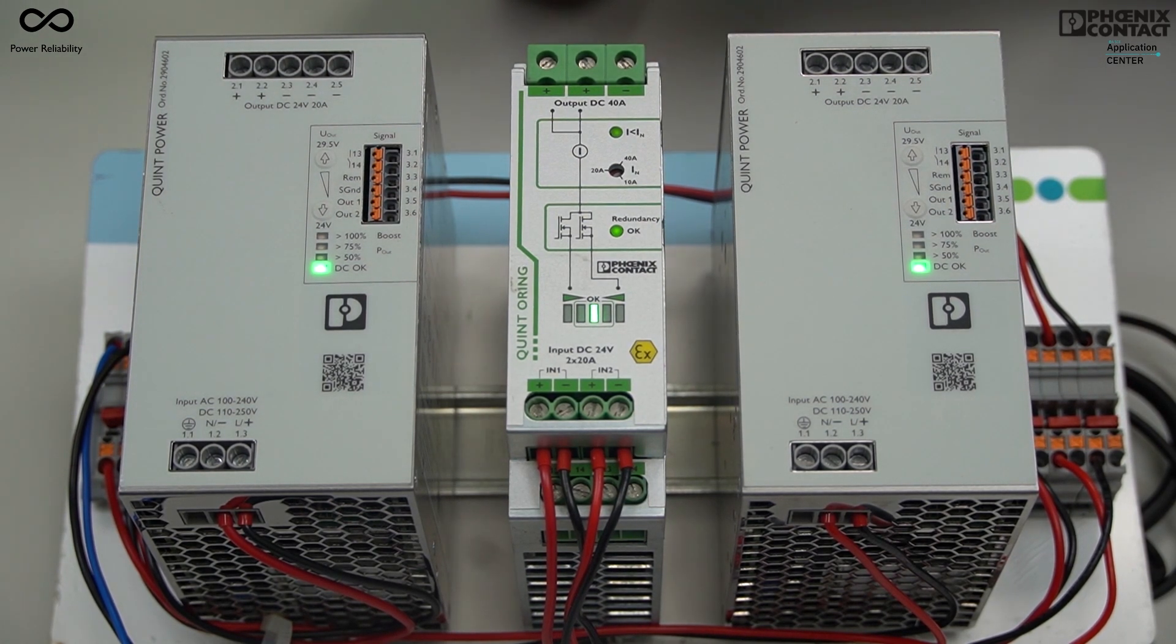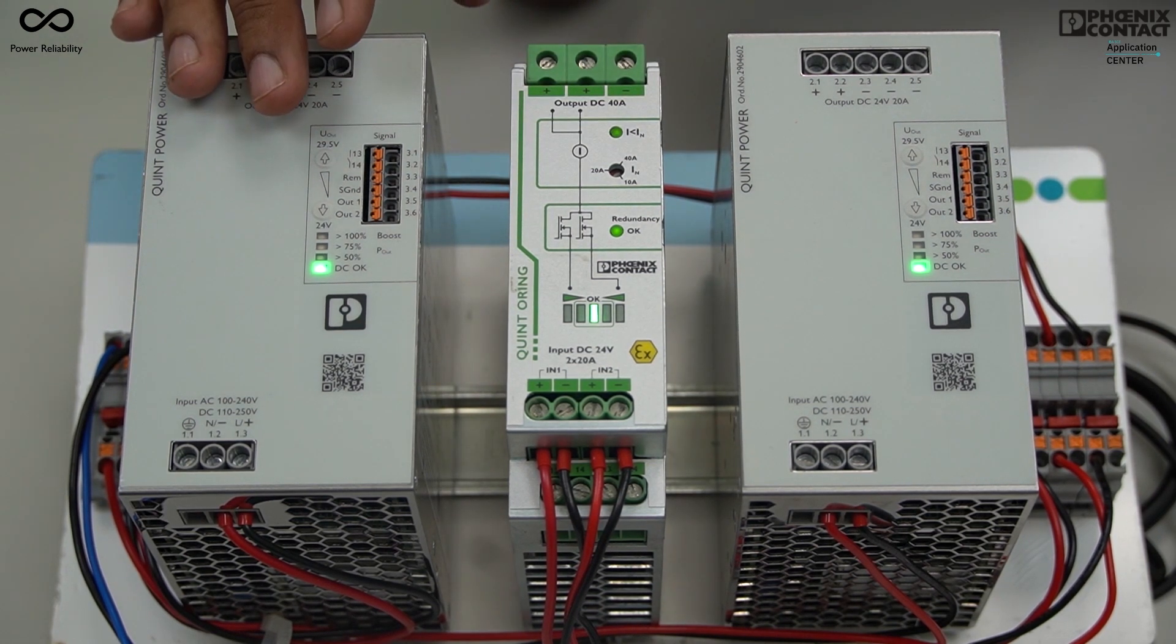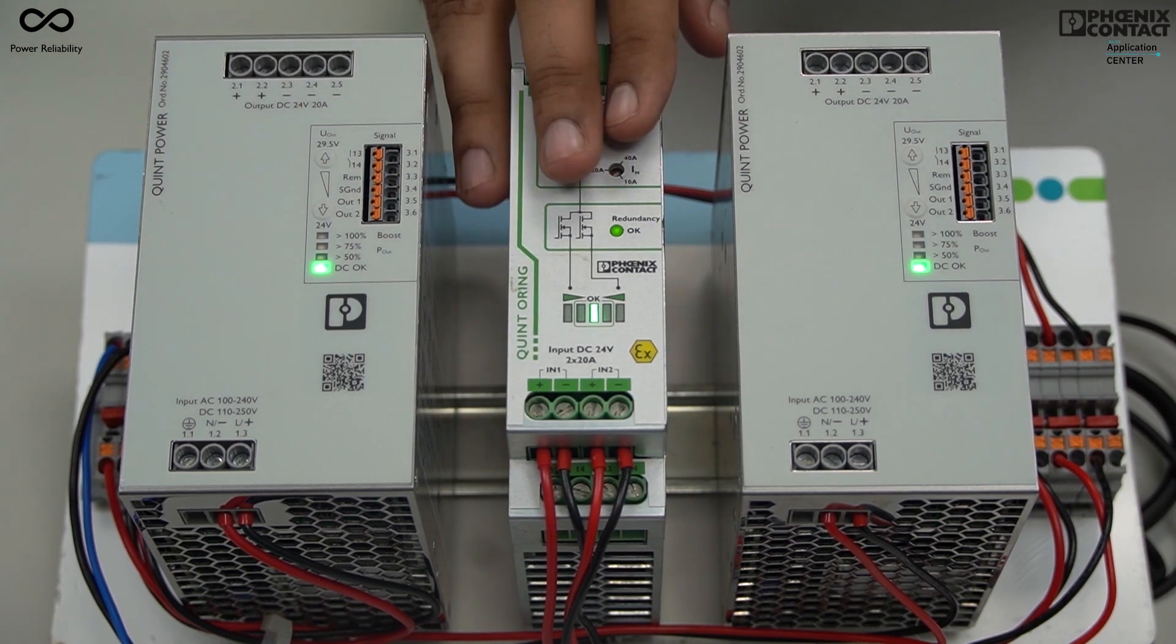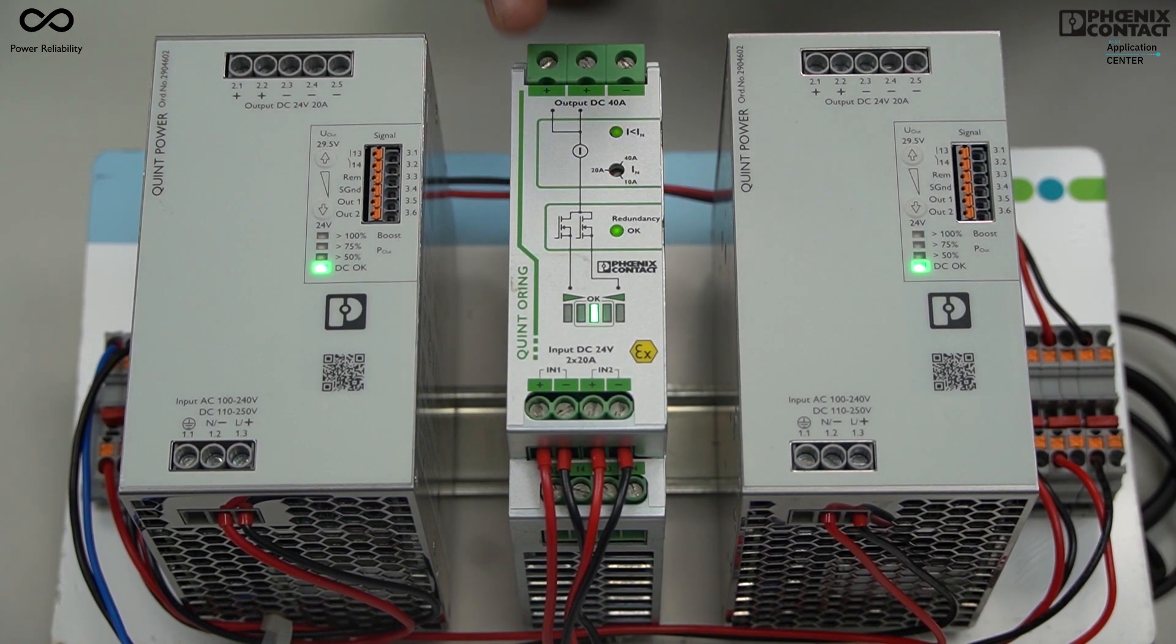Just suppose due to any unwanted condition, any of the power supply voltage is getting low. Then this module will give you a visual indication as well as remote indication.